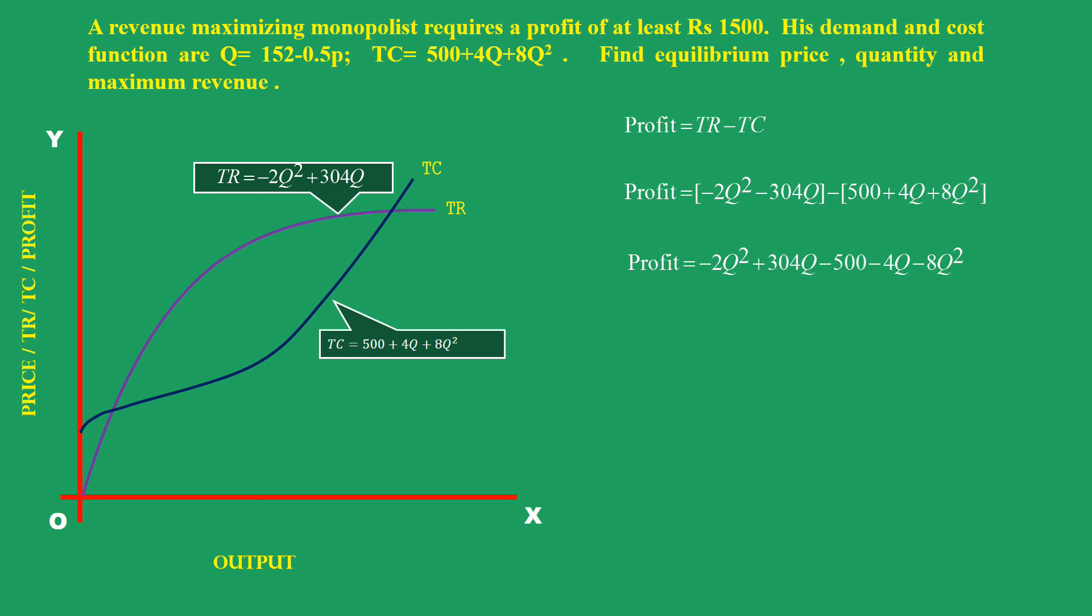Profit = TR - TC = -2q² + 304q - (500 + 4q + 8q²). On simplifying, we get Profit = -10q² + 300q - 500.